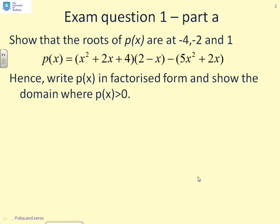So the first example, question 1: show that the roots of p(x) are at minus 4, minus 2, and 1, where p(x) equals x squared plus 2x plus 4, times 2 minus x, minus 5x squared plus 2x, and hence write p(x) in factorised form and show the domain where p(x) is greater than 0. The first thing I'm going to do is expand out this p(x) and see what we've got.